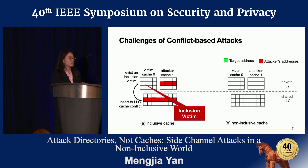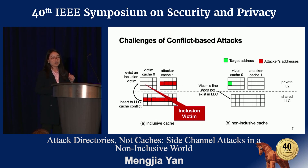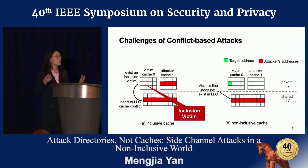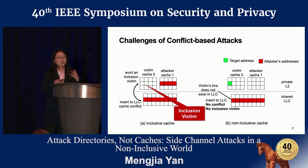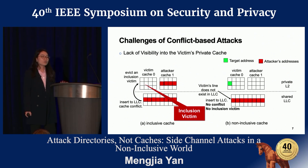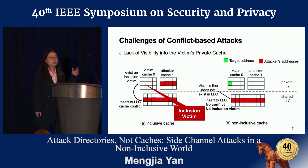But things will not work like this on the non-inclusive cache. When the victim accesses a target address, the line will not be duplicated in the LLC. No matter how many lines the attacker accesses — even filling the entire LLC — it still cannot create cache conflicts, and no inclusion victims can be created. Without the capability to evict the victim's line, the attacker loses visibility into the victim's private cache. That's why conflict-based attacks are very difficult on non-inclusive caches, and that's why people believed they would fail.